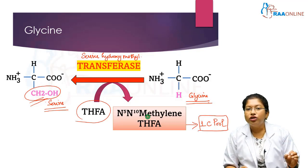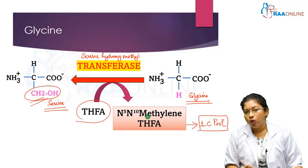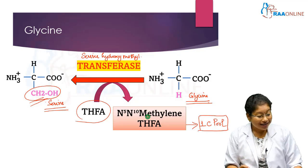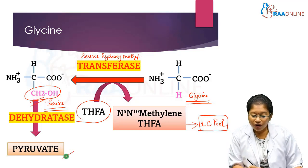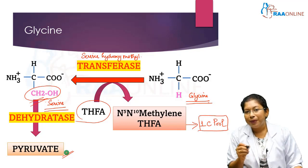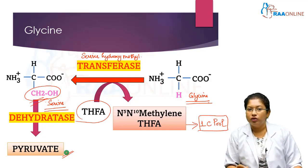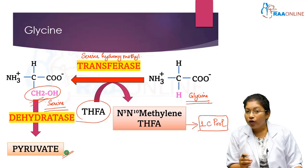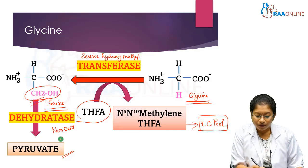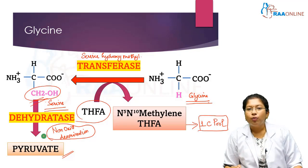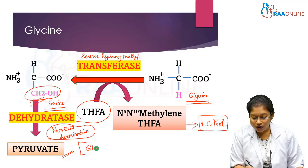Serine is a glucogenic amino acid. Serine can undergo non-oxidative deamination by removal of water - the enzyme is dehydratase - which produces pyruvate. Whenever pyruvate is produced, the metabolic end product is glucose, which is why serine is called a glucogenic amino acid.